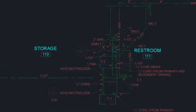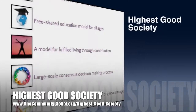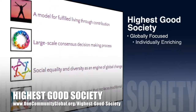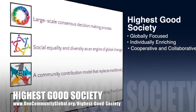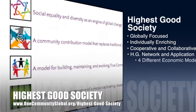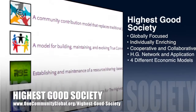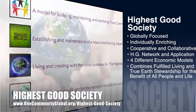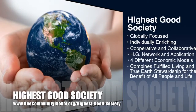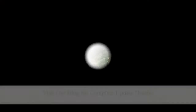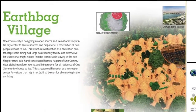One Community's approach to highest good society is globally focused, individually enriching, cooperative and collaborative. It includes a highest good network and application, four different economic models, and combines fulfilled living and true earth stewardship for the benefit of all people and all life on this planet.